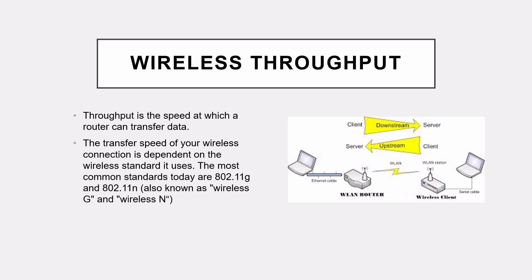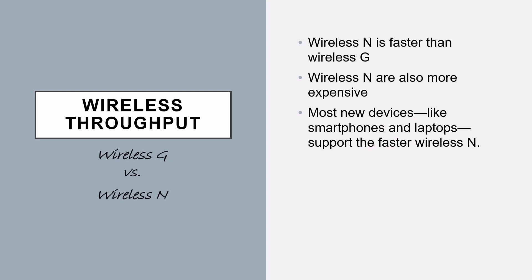Wireless Throughput is the speed at which a router can transfer data. The transfer speed of your wireless connection is dependent on the wireless standard it uses. The most common standards today are 802.11G and 802.11N. Wireless N is faster than wireless G, but wireless N is more expensive. Most new devices like smartphones and laptops support the faster wireless N, so wireless N is the better choice.